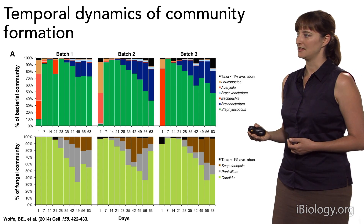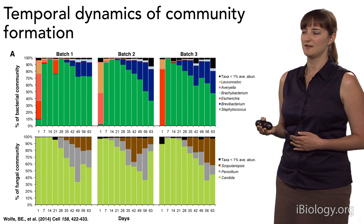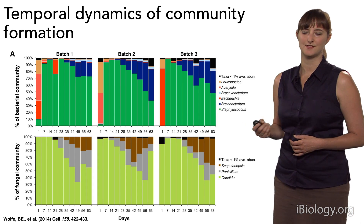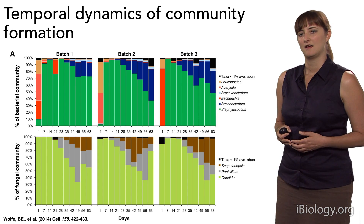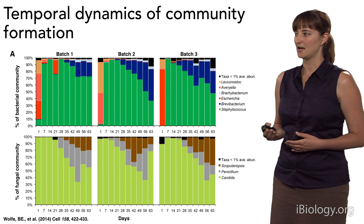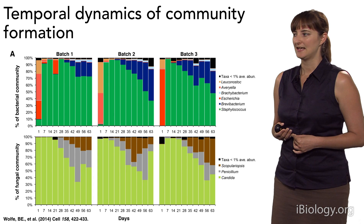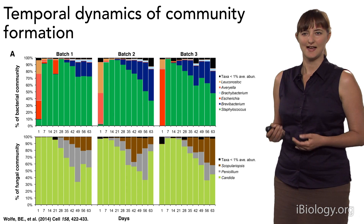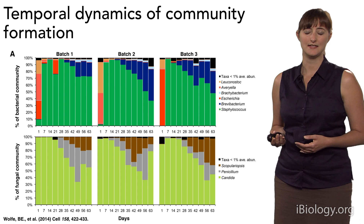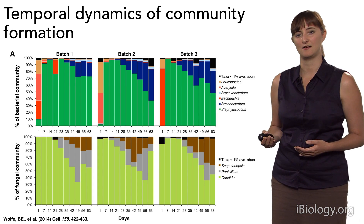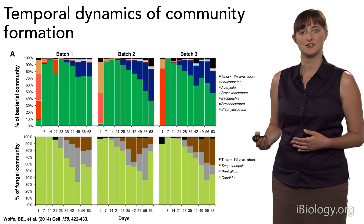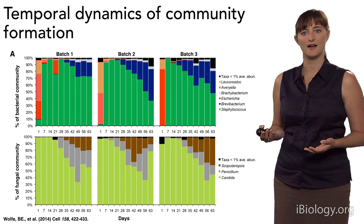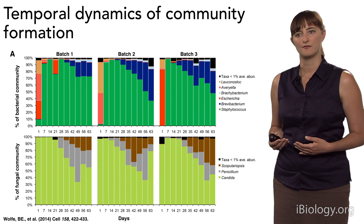We used sequencing methods to tell us what was actually happening within the formation of these communities. Sampling three different batches of cheese every week as they were aging, we saw an absolutely beautiful and reproducible succession of species. At early time points, the bacterial portion of the community is dominated by Staphylococcus, and then over time it shifts to be dominated by Brevibacterium. In the fungal portion, early on the community is dominated by the yeast Candida, followed by the filamentous fungi Penicillium, and then eventually Scopulariopsis. This generates hypotheses about which organisms are important in establishing a community and directing what types of organisms eventually end up in it.